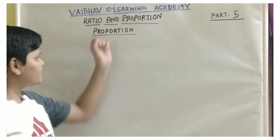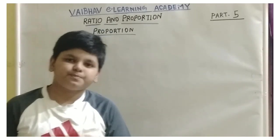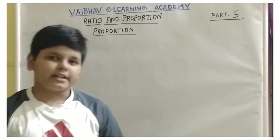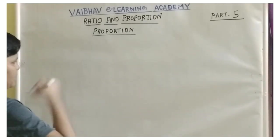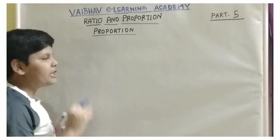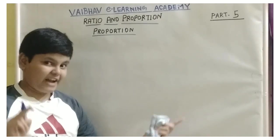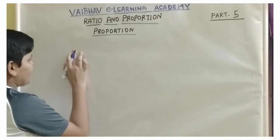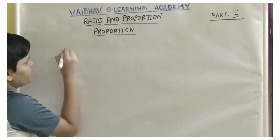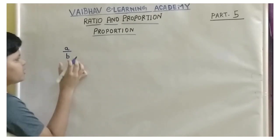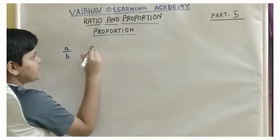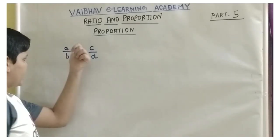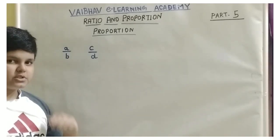What is a Proportion? Before going to that, let us take any ratio. As we all know, a ratio can be represented in two forms. One form is a fraction and one form is a ratio form. So let us take any example of a fraction. Let our fraction be a by b — this is one ratio — and c by d. So a by b and c by d, these two are ratios.